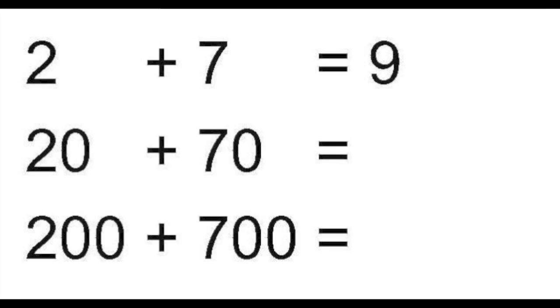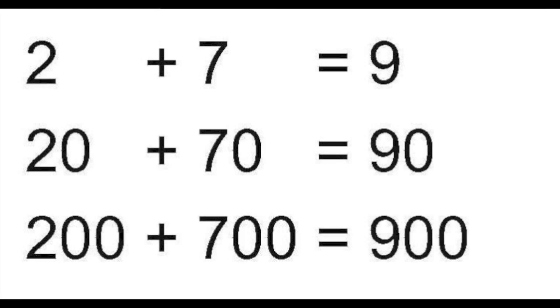Next is 20 plus 70, or 2 tens plus 7 tens, which equals 9 tens. So 20 plus 70 equals 90. Last is 200 plus 700, or 2 hundreds plus 7 hundreds, which equals 9 hundreds, or 200 plus 700 equals 900.